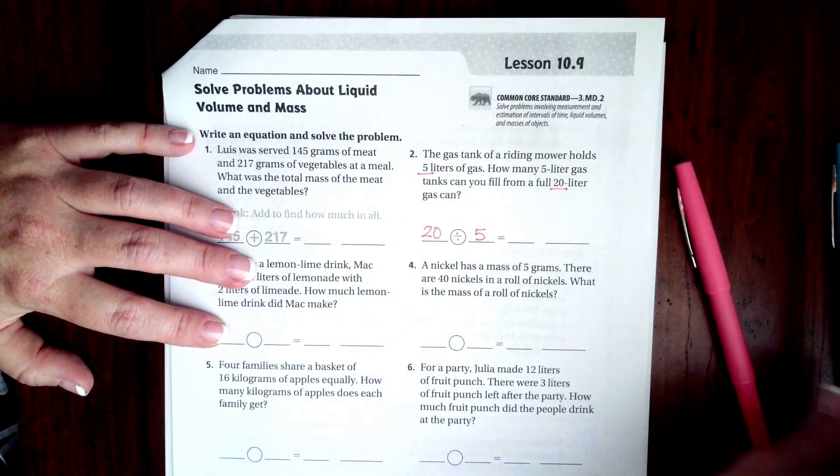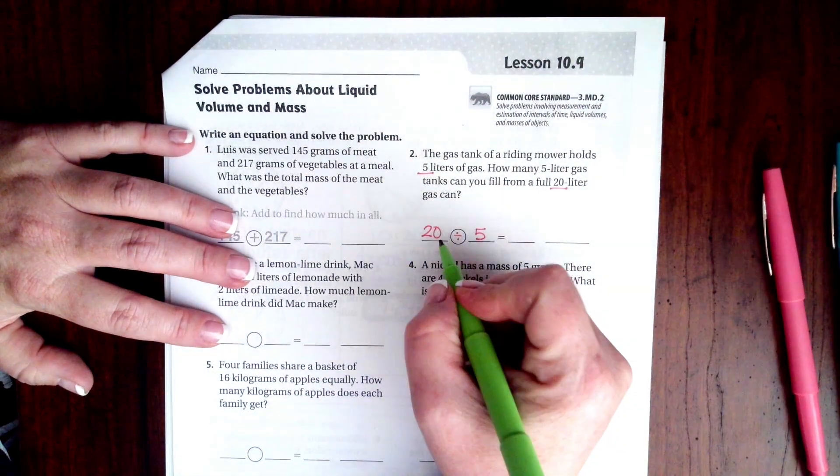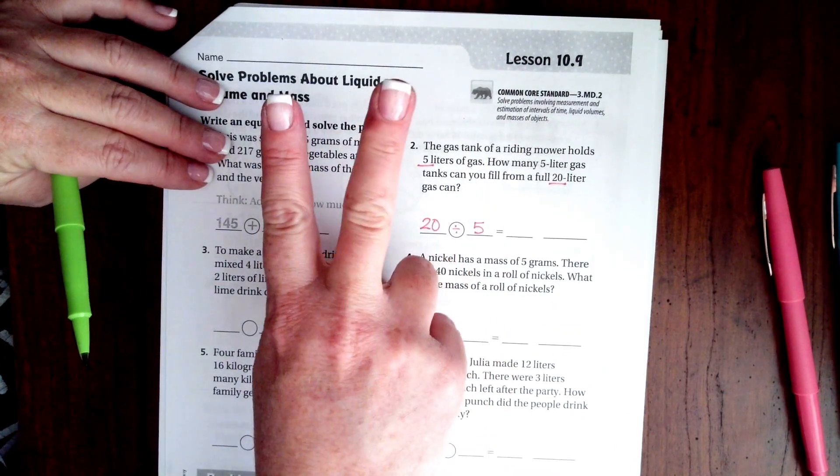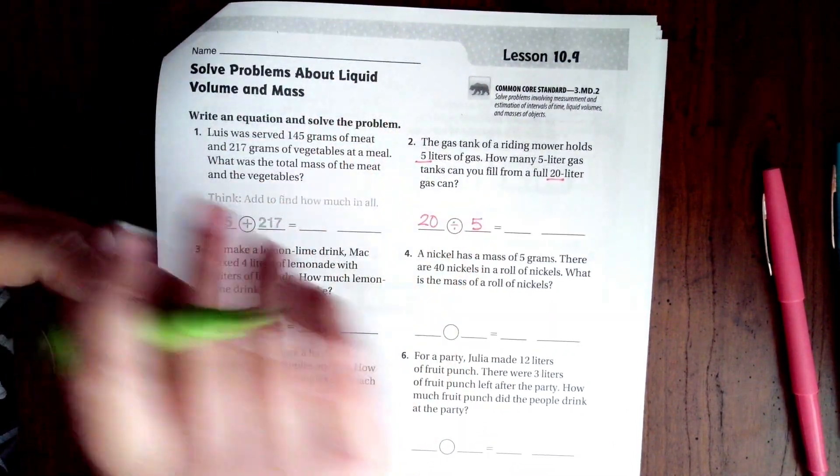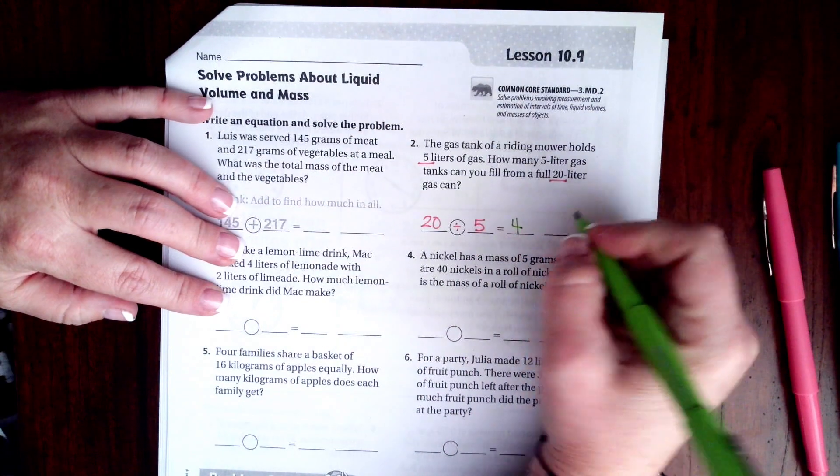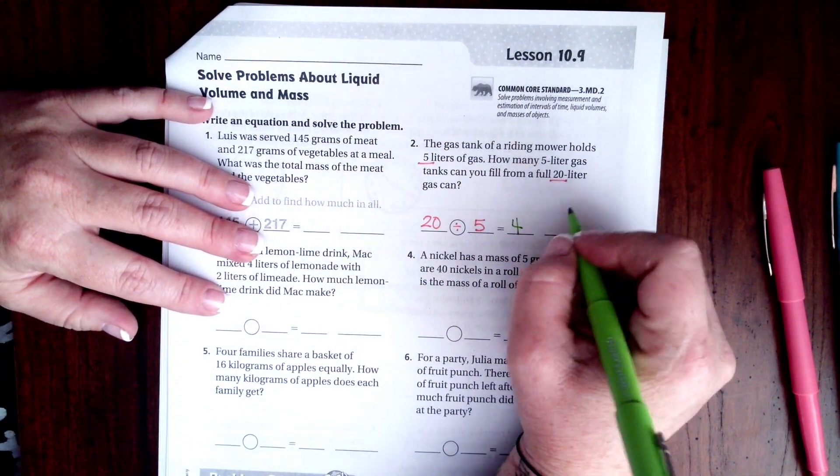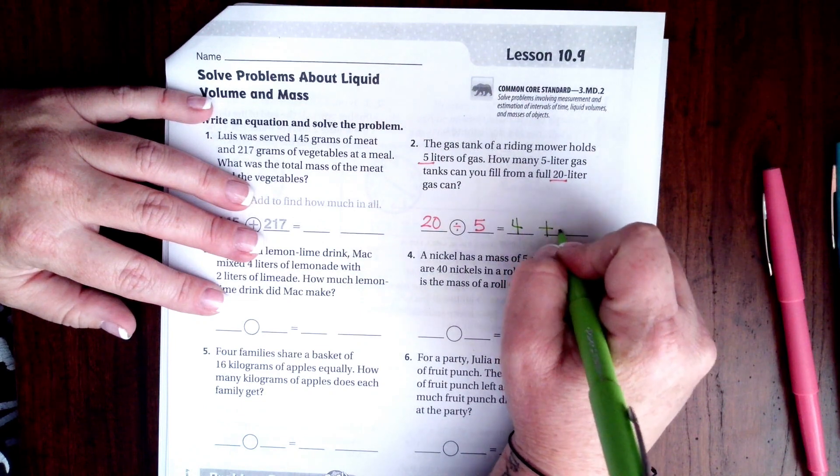We need to know how many 5 liters I can fit into that 20. So 20 divided by 5. I'm going to count by 5 until I get to 20. So 5, 10, 15, 20. That's 4. So it's going to be 4 tanks.